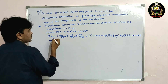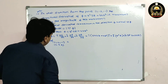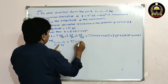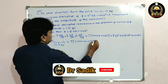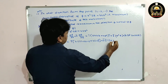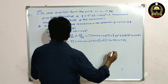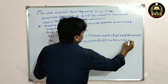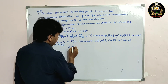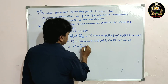Now evaluate del φ at the point (1, -2, -1), where x=1, y=-2, z=-1. The i-bar component: 2(1)(-2)(-1) + 4(-1)² = 4 + 4 = 8. The j-bar component: (1)²(-1) = -1. The k-bar component: (1)²(-2) + 8(1)(-1) = -2 - 8 = -10. So del φ = 8i - j - 10k.